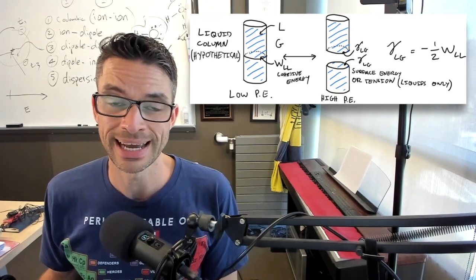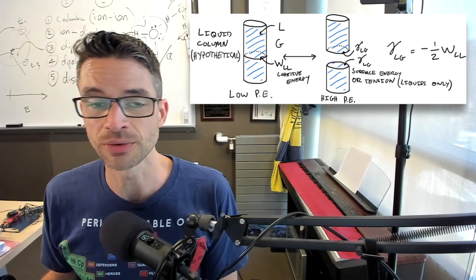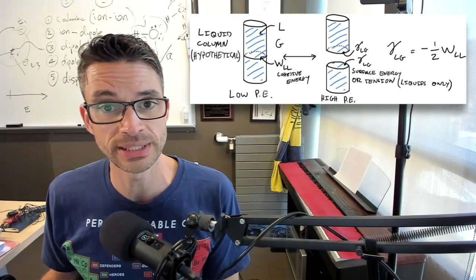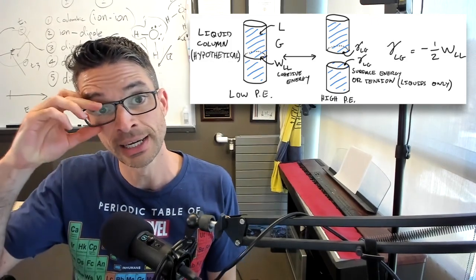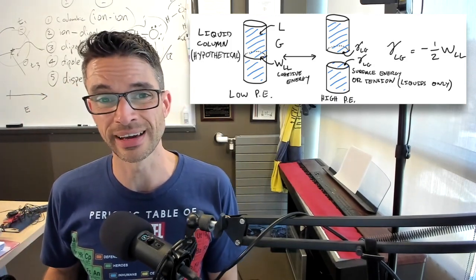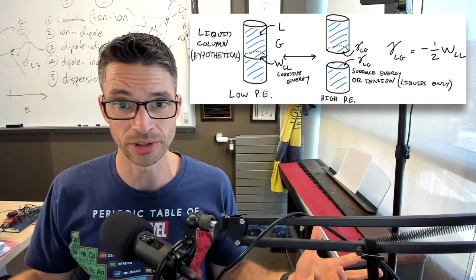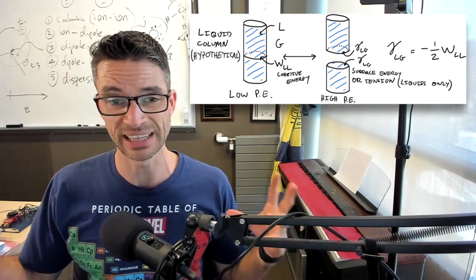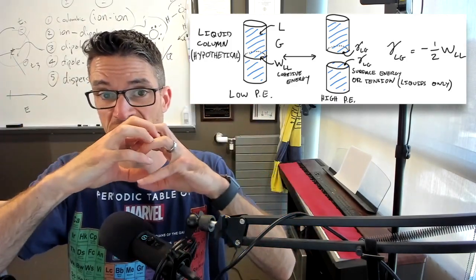What is that negative sign doing out there in the definition of the surface energy? Well, it is minus one half the work of adhesion, which is negative. So both of those negatives together will be positive. The surface energies are always positive because they are unfavorable compared to the reference state. The reference state in this case being stuck together.